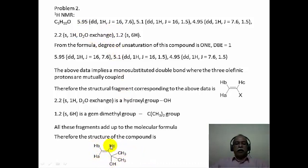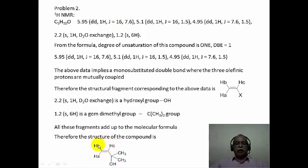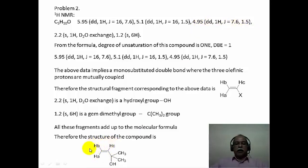In this problem, you have three olefinic hydrogens giving three signals in the olefinic region from 4.95 to 5.95 ppm, with trans coupling of 16 Hz, cis coupling of 7.6 Hz, and geminal coupling of 1.5 Hz. The signal at 5.9 ppm corresponds to HC which has both trans and cis coupling. The signal at 5.1 ppm corresponds to HA with trans and geminal coupling, while HB at 4.95 ppm has cis and geminal coupling. The D2O exchangeable OH and the gem dimethyl group at 1.2 ppm complete the structure.